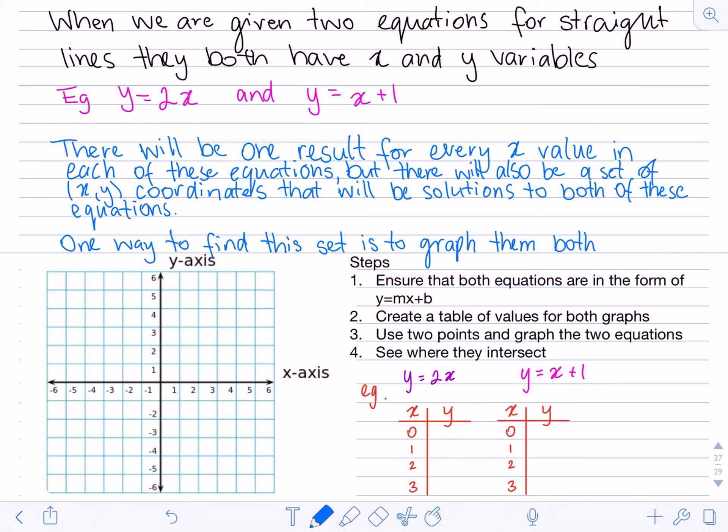So let's go through the steps of how we do this. The first step is to ensure that both equations are in the form of y equals mx plus b. So if I look at both these equations, y equals 2x and y equals x plus 1, they are both in the form of y equals mx plus b. So I don't need to rearrange them in this case.